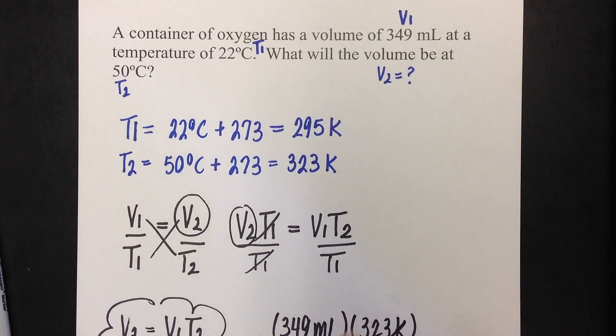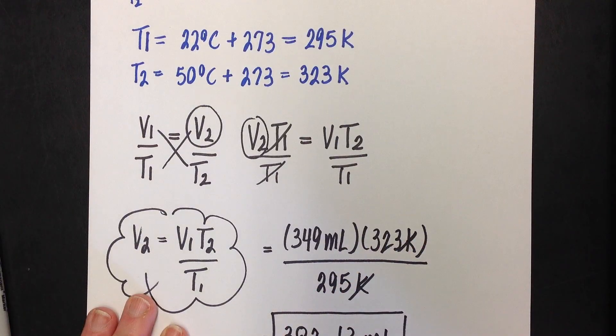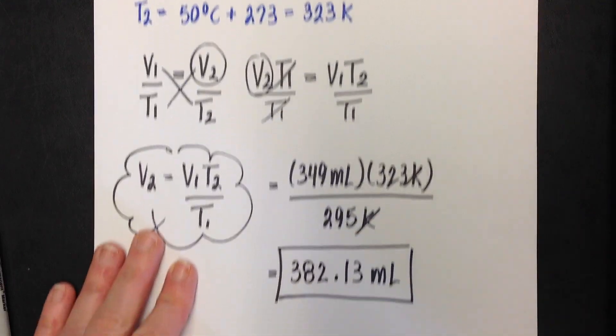So, again, that looks reasonable. If I would have accidentally maybe gotten my temperatures mixed up, which can happen from time to time, that's a place you've got to be real careful, then I would have come out with a different volume, and it probably would not have looked right. That looks reasonable, so I can be very confident in my answer.